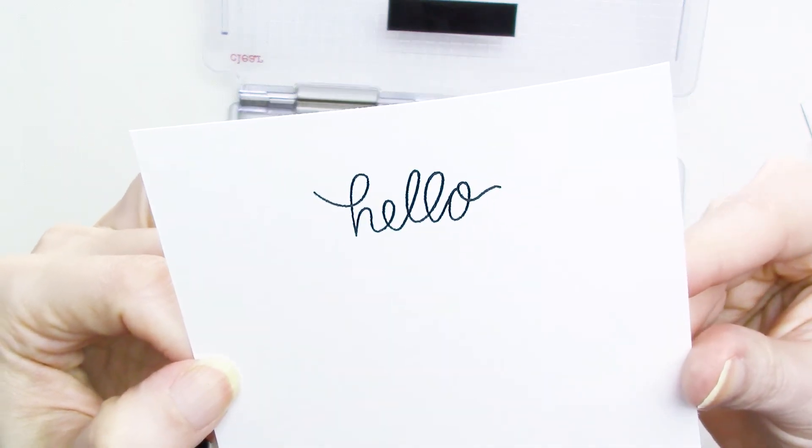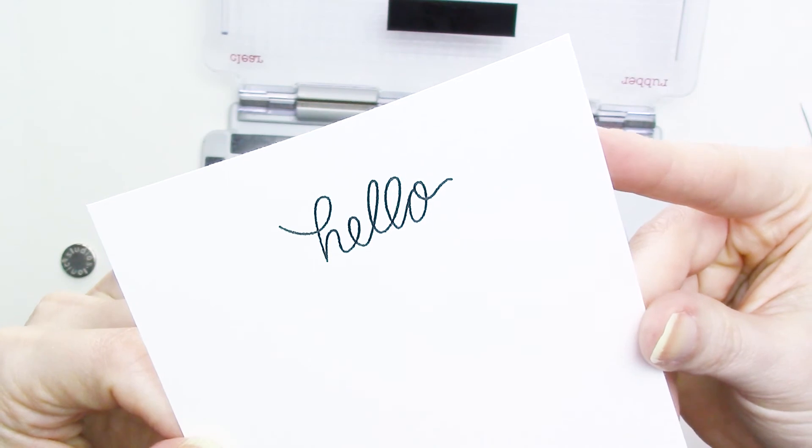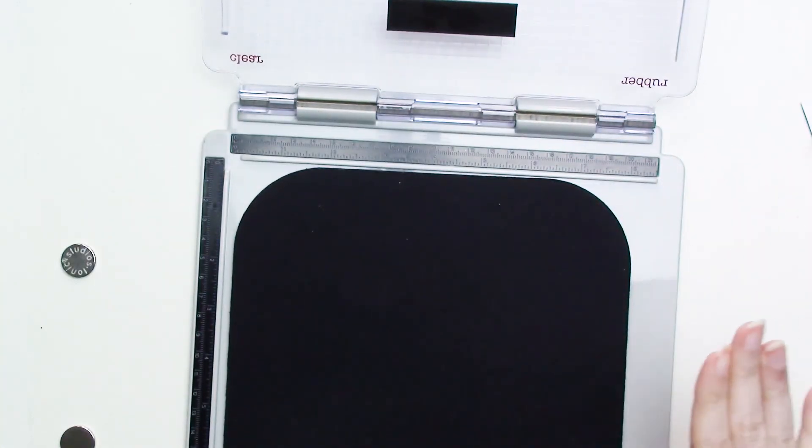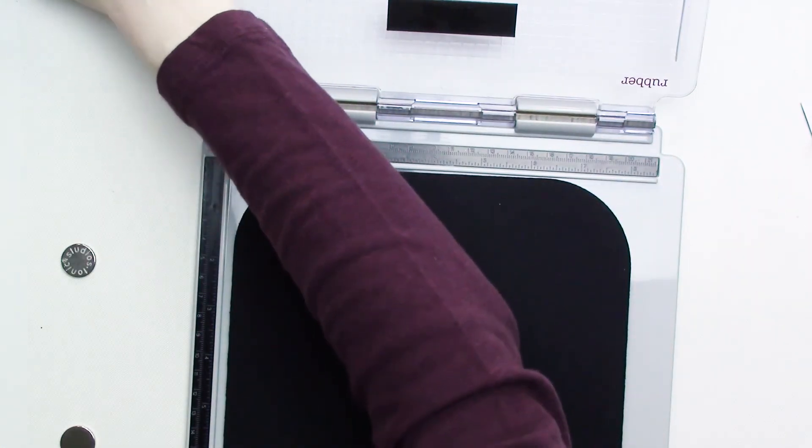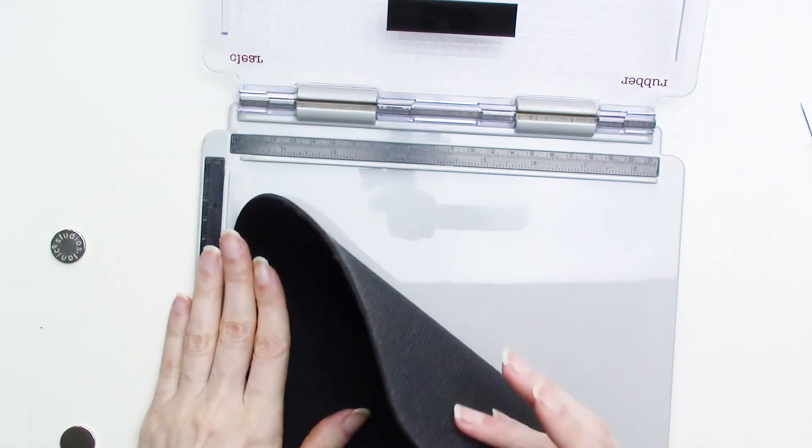I think this result is pretty darn good. To store the stamp, you can pop it into the mount that comes with it without removing the adhesive protective paper from the mount base. Then just click the lid on and store it away until you need it again.